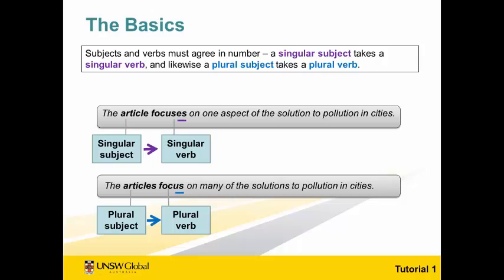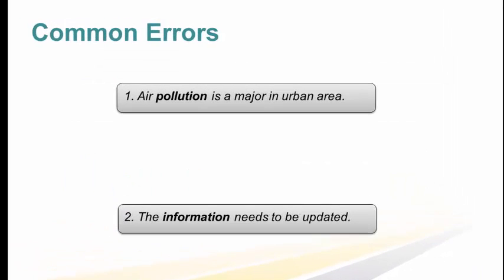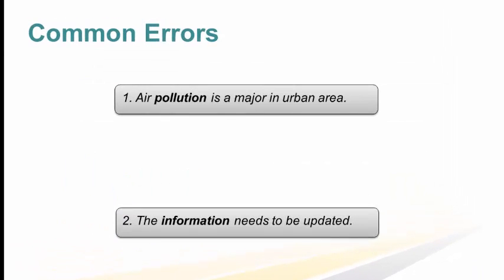This is a basic rule, and you should be able to write these types of sentences accurately, as they only have short subjects. But even with sentences with short subjects, there are some common errors. Have a look at these two example sentences, and notice the words in bold, pollution and information. I'd like you to think about the word form.